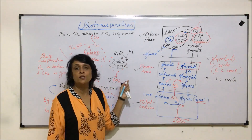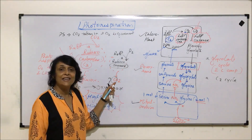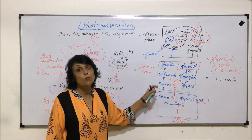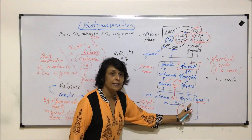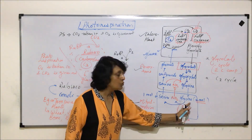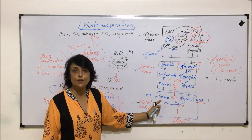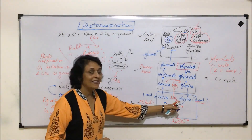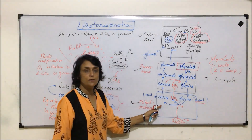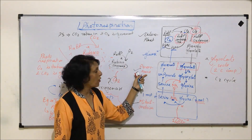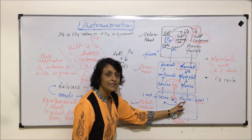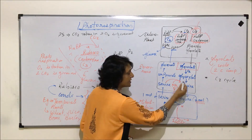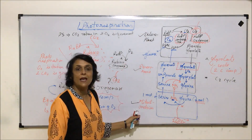In photorespiration, the already fixed carbon is given out, so there is loss of carbon. The most common exam question is: in which reaction is carbon dioxide given out? The answer is the conversion of glycine into serine — two molecules of glycine change into one molecule of serine, and that is when one carbon is released as carbon dioxide. The amino group released goes back into peroxisomes to help in synthesis of glycine, so this amino group keeps circulating between peroxisomes and mitochondria.